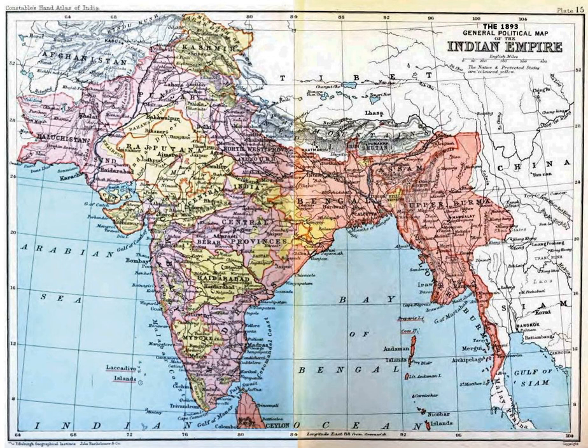India was divided into British India — regions that were directly administered by the British, with acts established and passed in British Parliament — and the princely states, ruled by local rulers of different ethnic backgrounds. These rulers were allowed a measure of internal autonomy in exchange for British suzerainty. British India constituted a significant portion of India both in area and population. In 1910, for example, it covered approximately 54% of the area and included over 77% of the population. In addition, there were Portuguese and French exclaves in India.